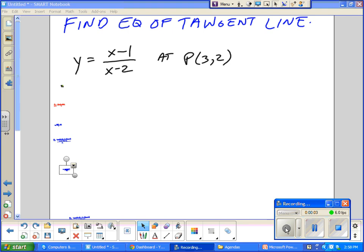Alright, so I want to find the equation of a tangent line to the rational function x minus 1 over x minus 2 at the point (3, 2). Now (3, 2) is in the domain. Do we agree? The domain of that function is all real except 2.